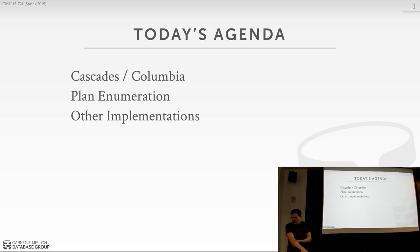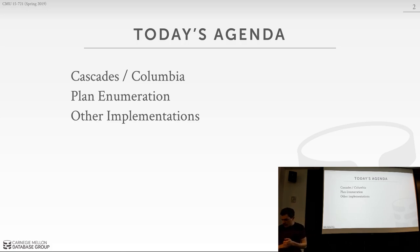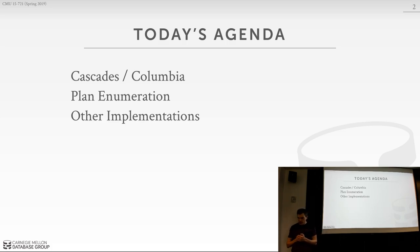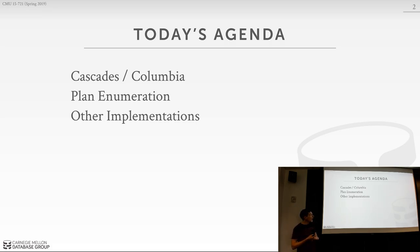Today we're going to spend most of our time talking about Cascades or Columbia, which was the paper you guys read last class. Then we'll briefly talk about the plan enumeration problem, which is what the paper from the Germans was trying to solve. And then we'll finish off talking about some other implementations of query optimizers.